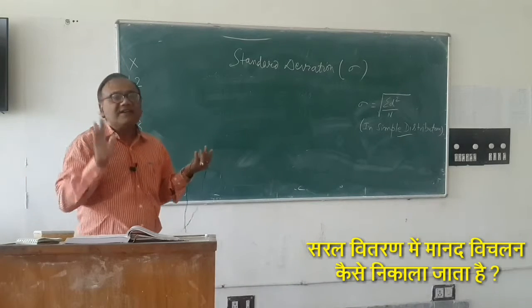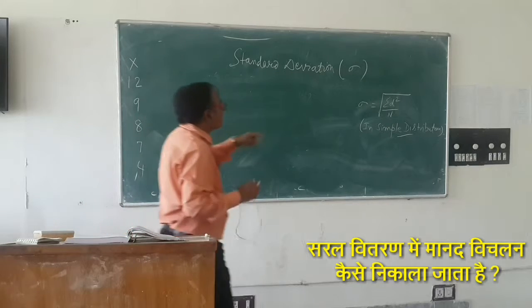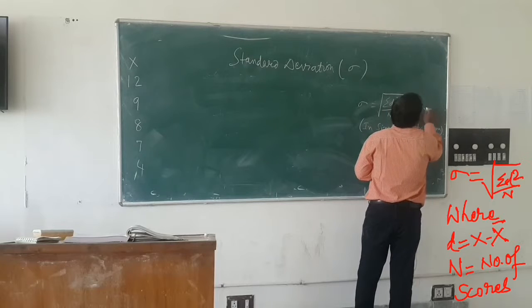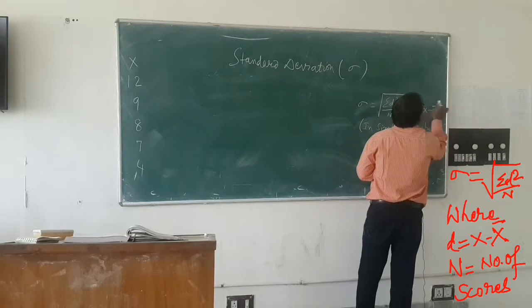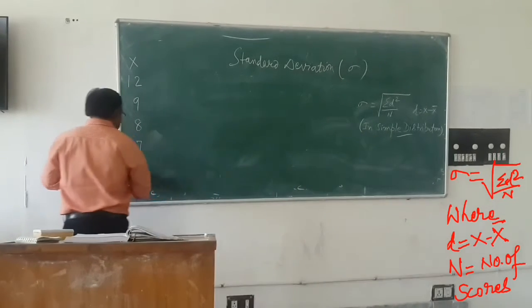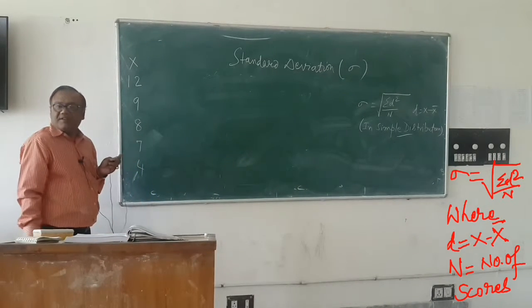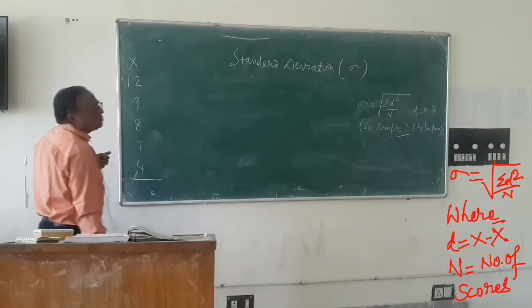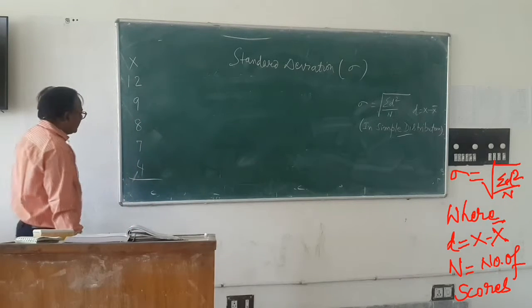And this one has standard deviation. So we will use this formula. So we have told you before that d is equal to x minus x bar. So we have to remove mean deviation. Standard deviation or mean deviation, to find d we need to find the mean. But we have to remove mean.